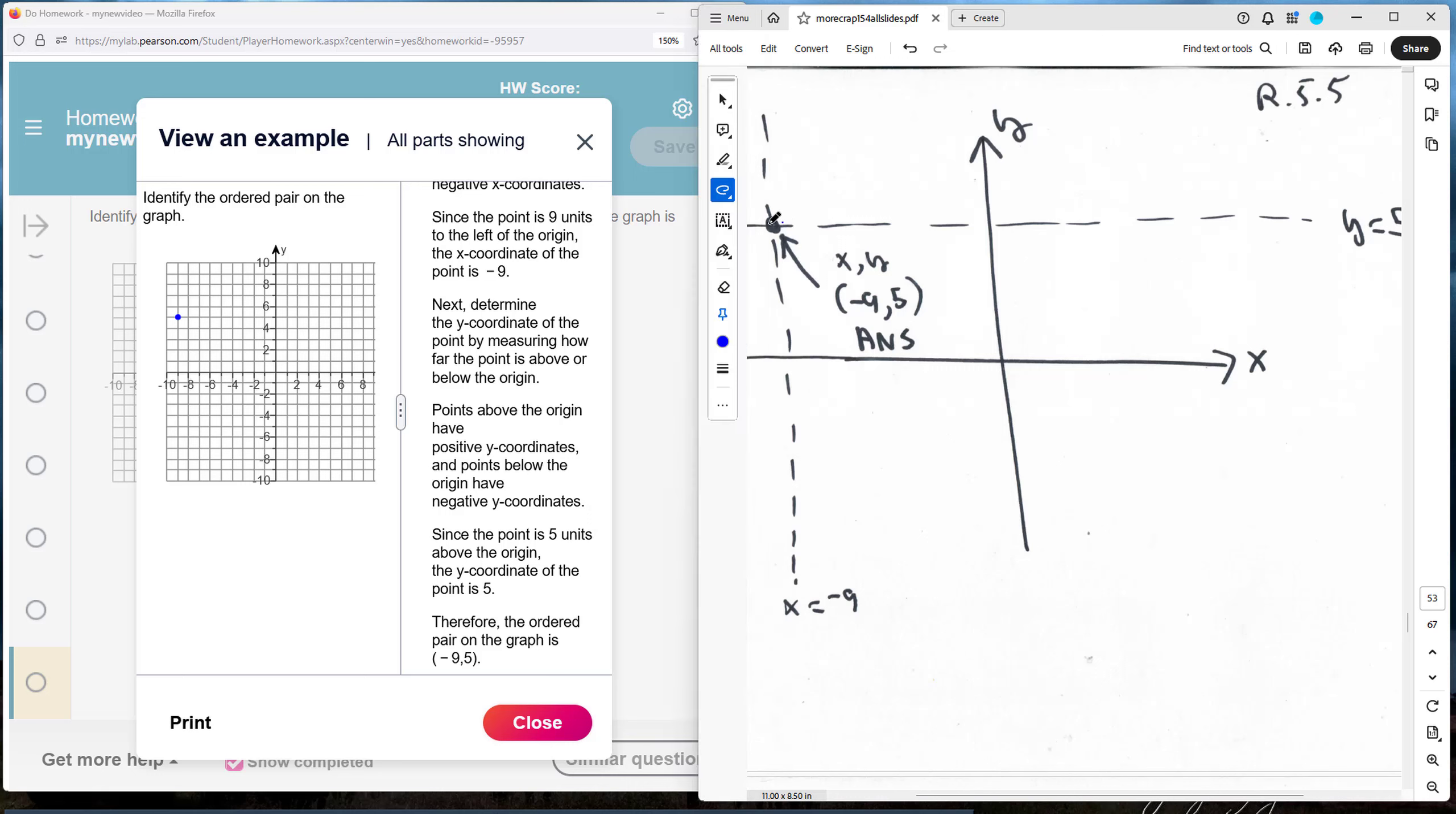The intersection of those two points is the location of that point here which is at negative 9, 5.